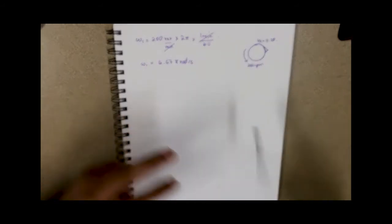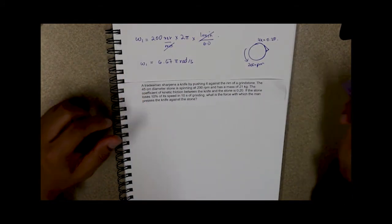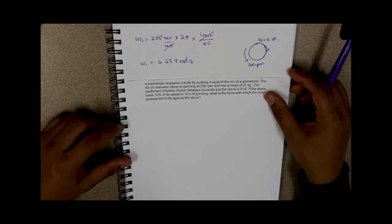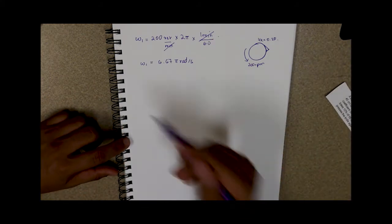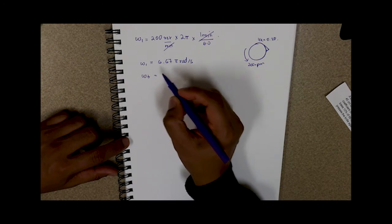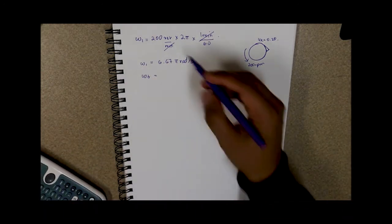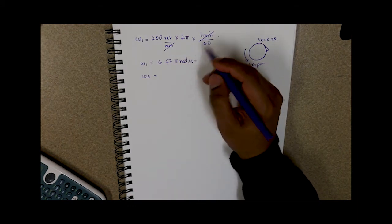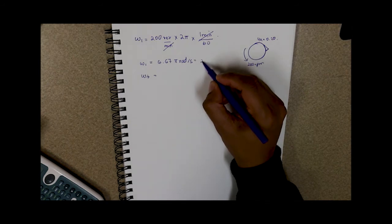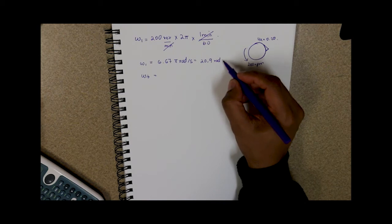The question also tells us that if the stone loses 10 percent of its speed in 10 seconds of grinding, so our final angular velocity is essentially 10 percent of this value. So if we convert this value and we eliminate the π, we would end up with 20.9 radians per second. We just added that value times 3.14.